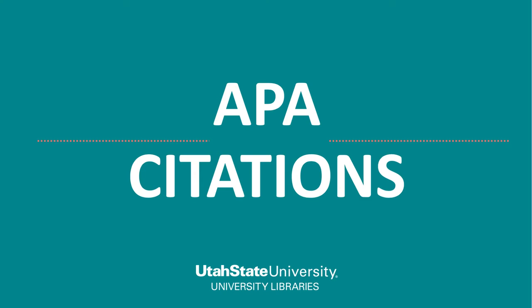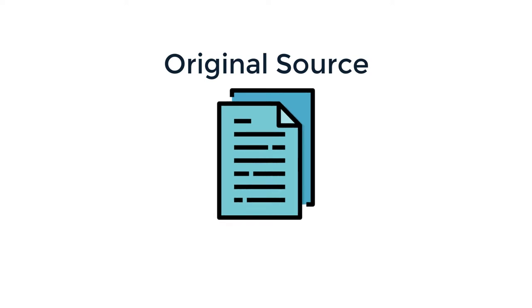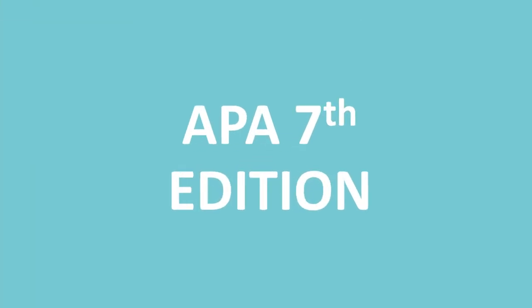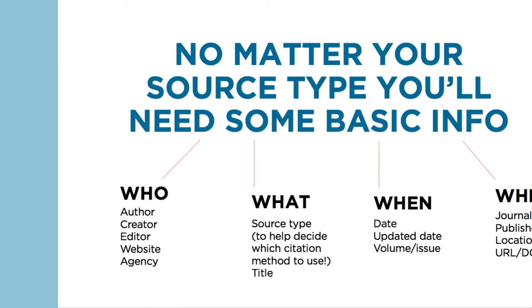When you're writing a paper, correct citations help your readers know where you got the information so they can find the original information themselves. The citation style we're looking at today is the 7th edition of APA. To build correct APA citations, we need some basic information about each source, such as author names, publication dates, and more.